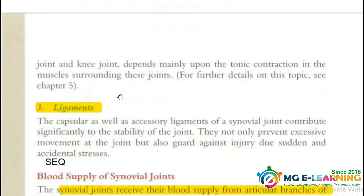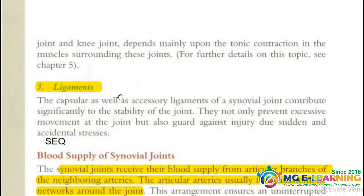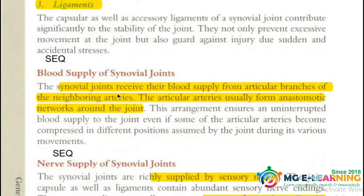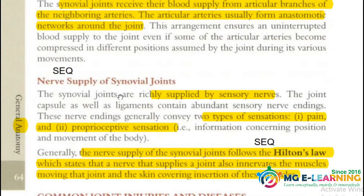Next is blood supply and nerve supply, which are again important for your SEQ points. Hilton's law explains the nerve supply of synovial joints, so it is important and you have to study it for your SEQs.